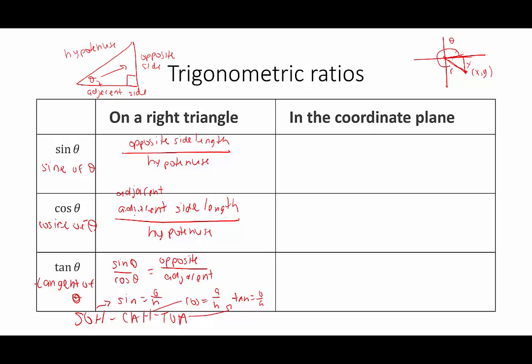Always, always, always, theta is wedged in between the x-axis and the terminal side. Whether we're in quadrant two — where we go down to the x-axis — or in quadrant three — where we always go up to the x-axis — the rule is always the same: you always connect to the x-axis, never the y-axis. We use the right triangle formed between the terminal side and the x-axis, applying the same SOHCAHTOA ratios.